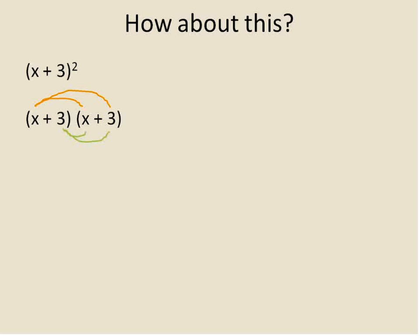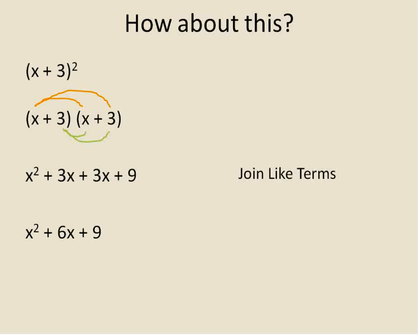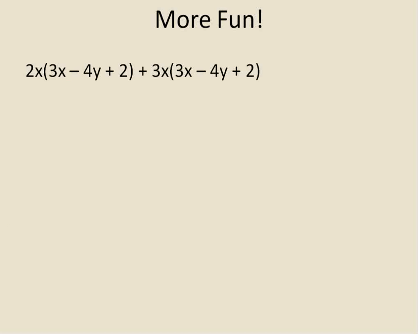What x plus 3 squared means is x plus 3 times x plus 3, so it's helpful to write it out. Remember, multiply the first term times each term in the second parentheses, and then the second term times each term. x times x gives x squared; x times 3 gives 3x; 3 times x gives 3x; and 3 times 3 gives 9. So we have x squared plus 3x plus 3x plus 9. Joining like terms gives x squared plus 6x plus 9 — notice how you'd completely miss the plus 6x if you just squared each term individually. Whenever you see parentheses squared or raised to any power, write it out and multiply it out.